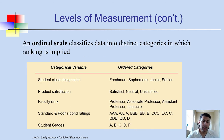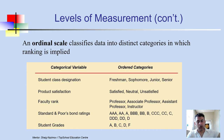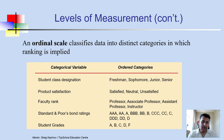The ordinal scale classifies data into distinct categories in which ranking is implied. For instance, university student class designation — freshman, sophomore, junior, or senior — is an ordered category. Freshman is less advanced than junior. Another example is product satisfaction: satisfied, neutral, or unsatisfied. If a sales company has customer data, those customers can be divided into satisfied, neutral, and unsatisfied groups.